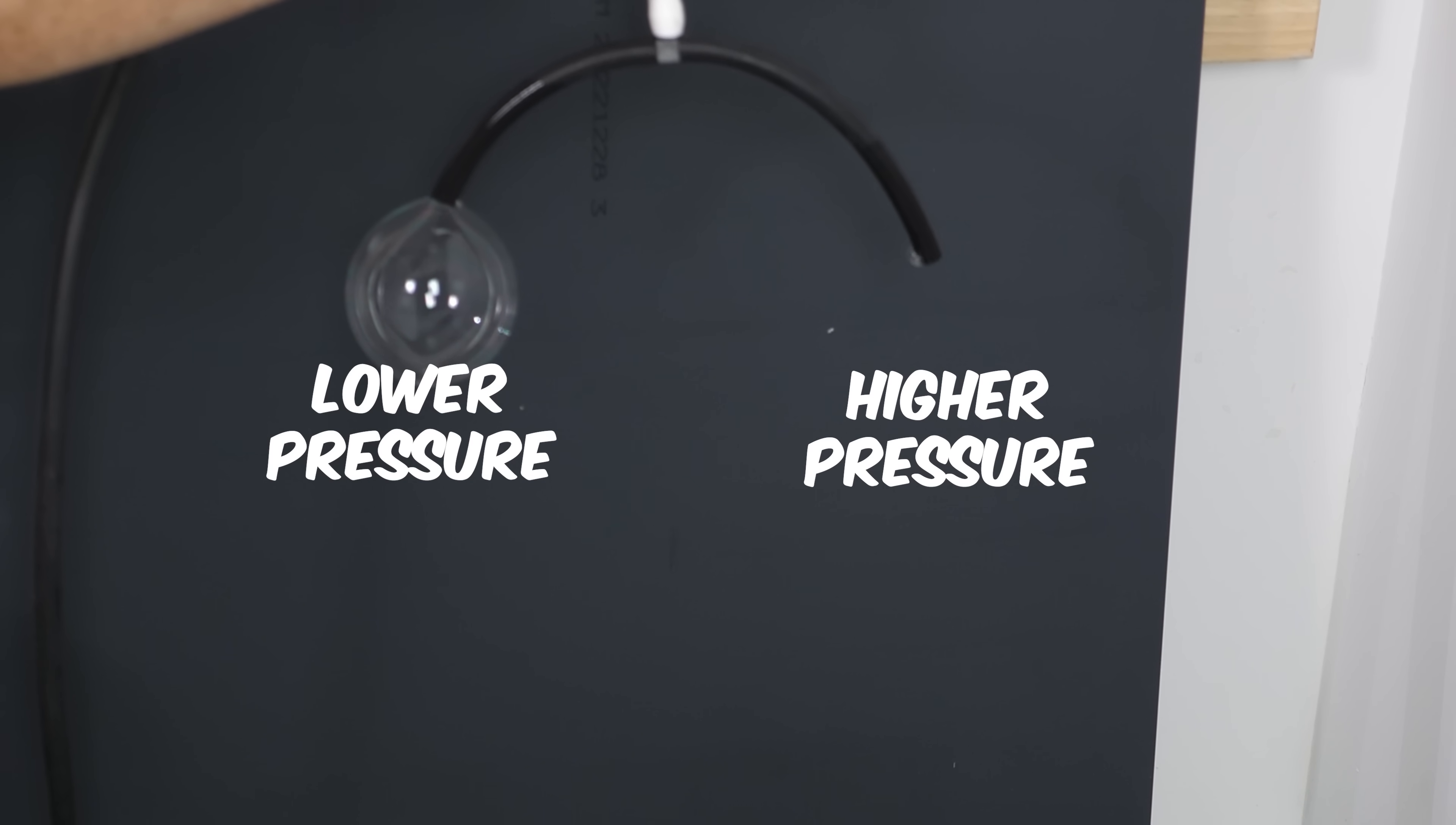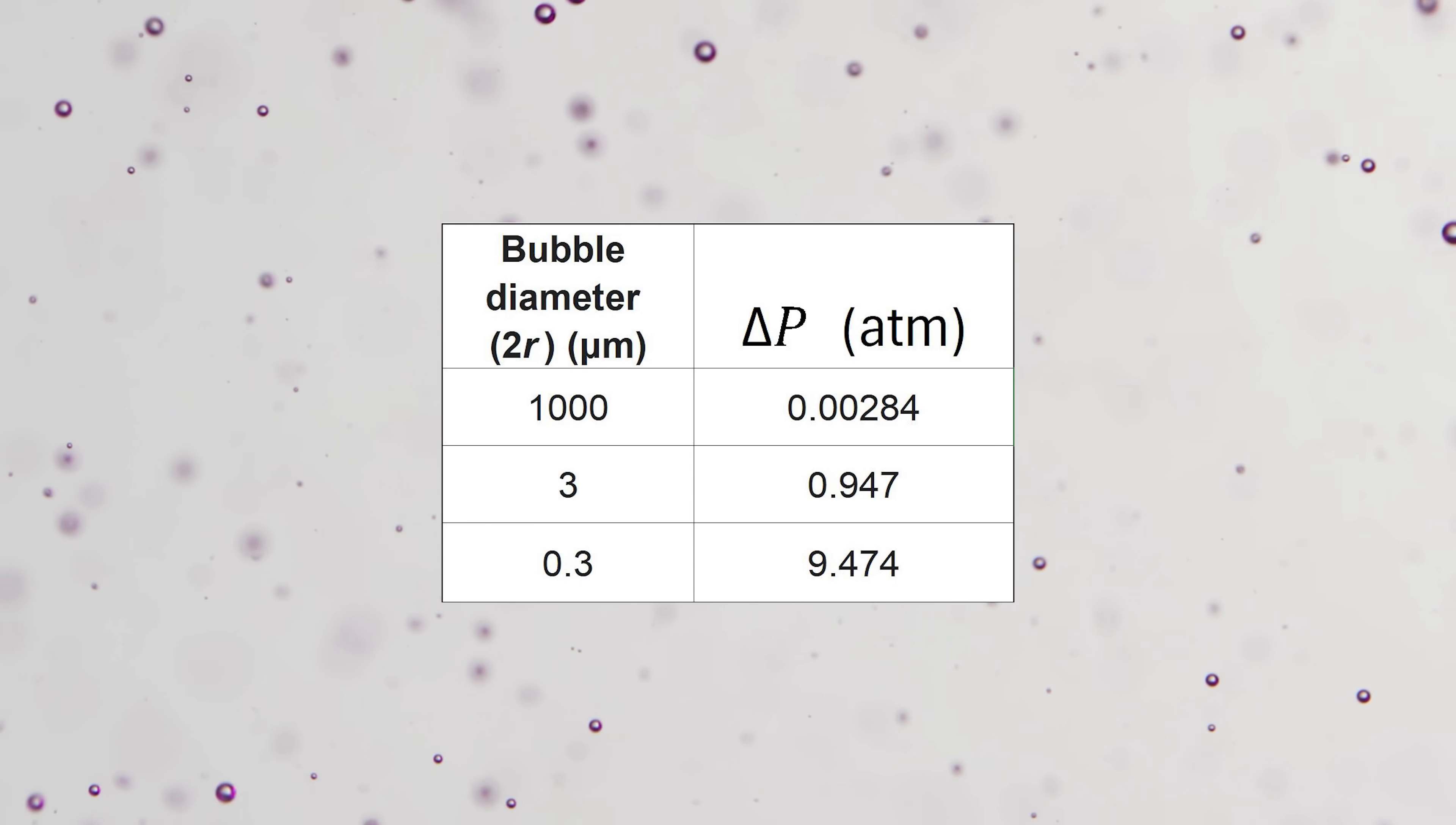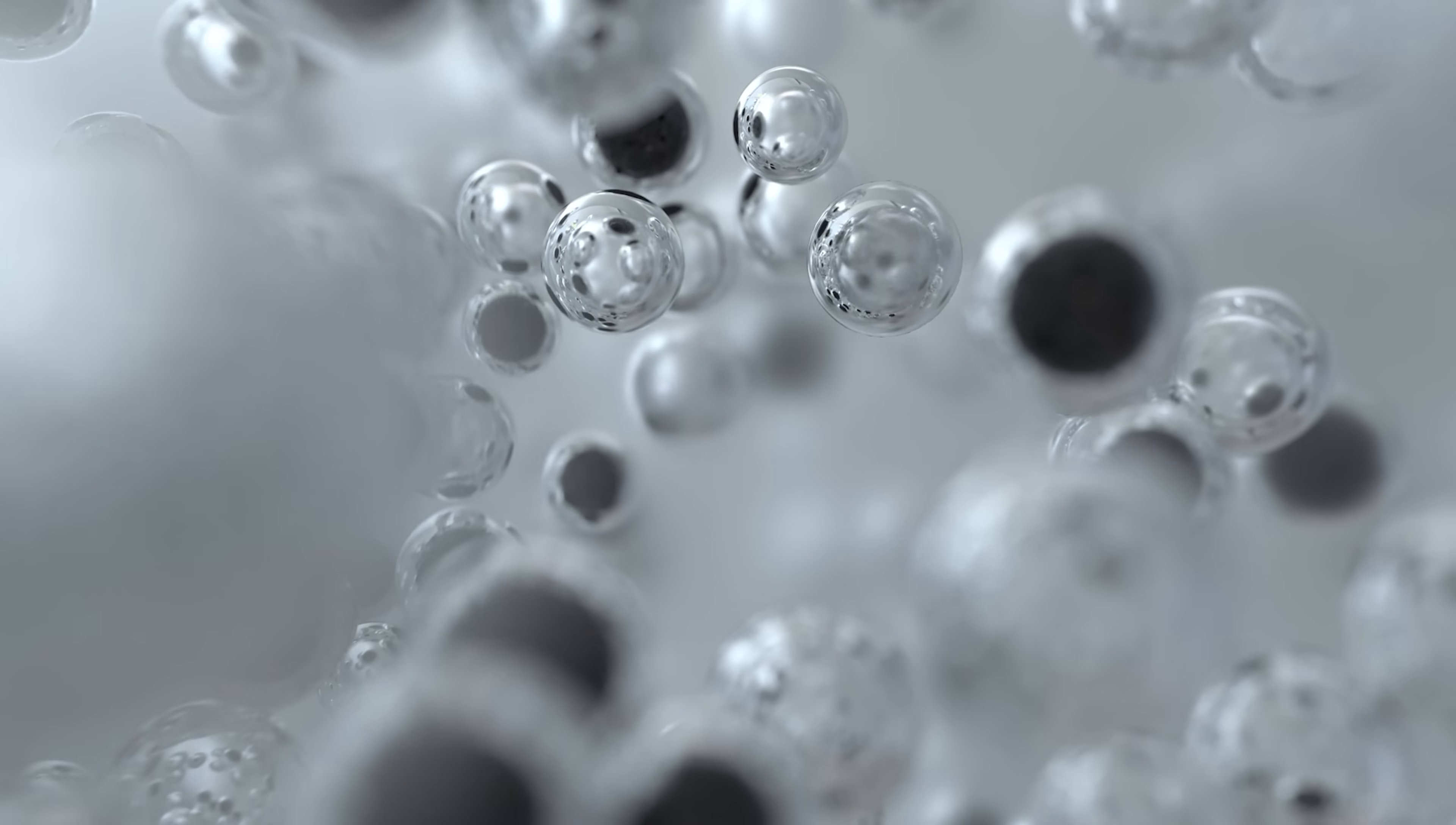A one millimeter bubble has almost negligible pressure inside of it. But for small bubbles, the pressure gets extremely large. For a 0.3 micrometer bubble, the pressure inside is nine atmospheres. Because small bubbles have higher pressure, that means that nano droplets will react differently than bigger droplets because they're at a higher pressure inside. So the chemistry and physics of small drops or bubbles becomes much more complicated because of this higher pressure inside.